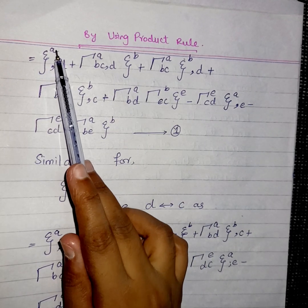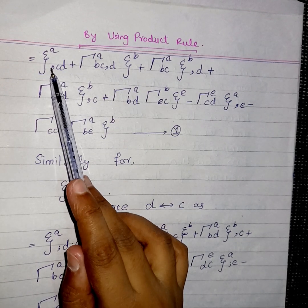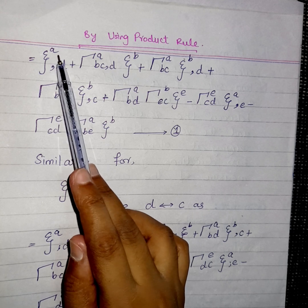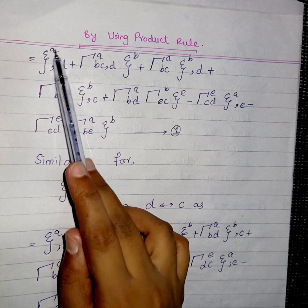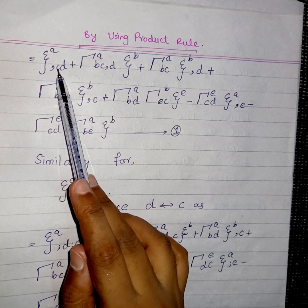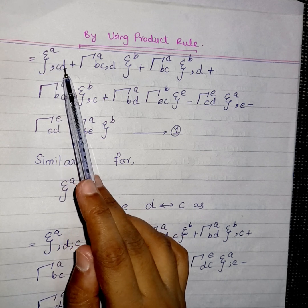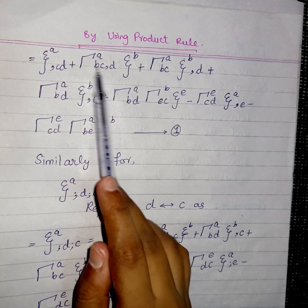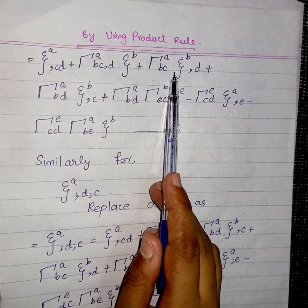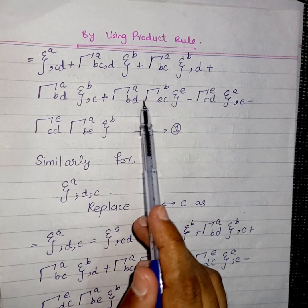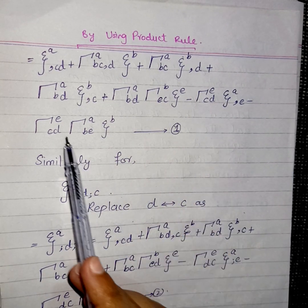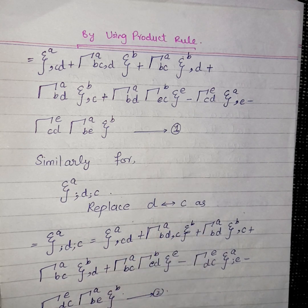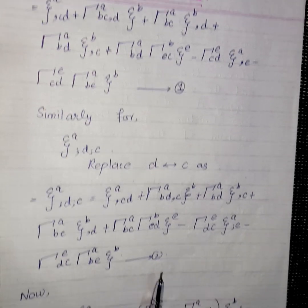Applying the product rule gives ξ^A_C,D, meaning the partial derivative of ξ^A semicolon C with respect to D, plus the remaining terms from the product rule. After simplifying all the other terms, we obtain equation number one.